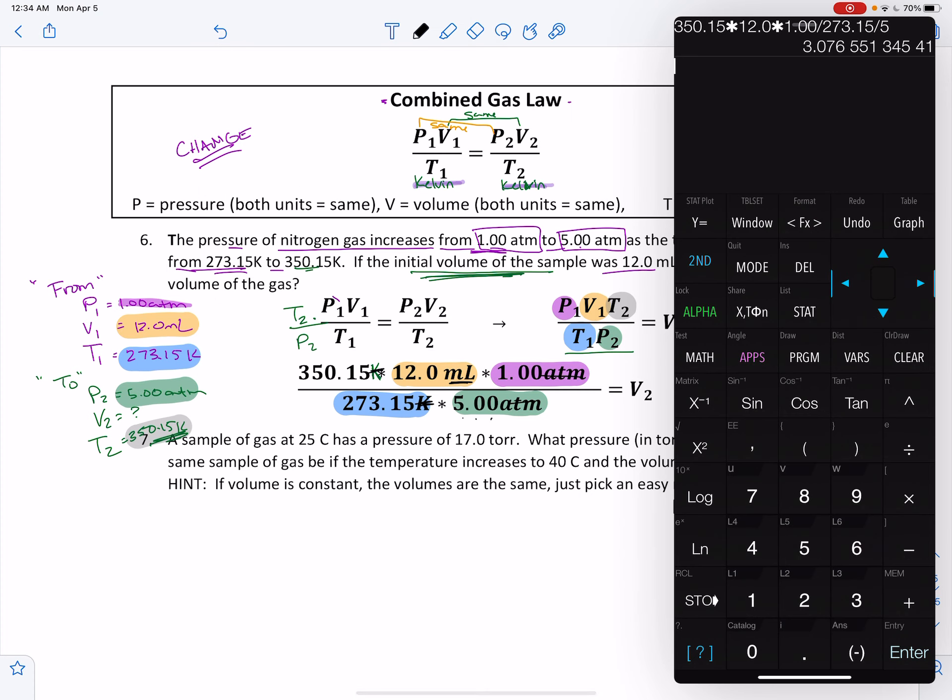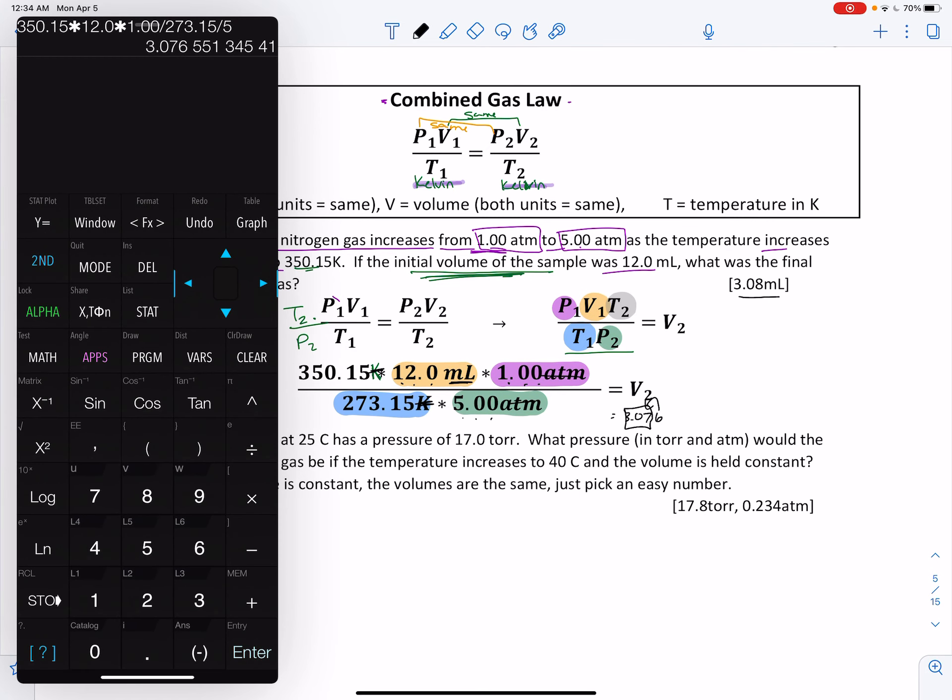And so you'll notice that it looks like the significant figs in here are still sitting at 3. So this gives me 3.07. I'm going to throw another one in just to show that the 7 gets bumped up. So 3.08 milliliters.